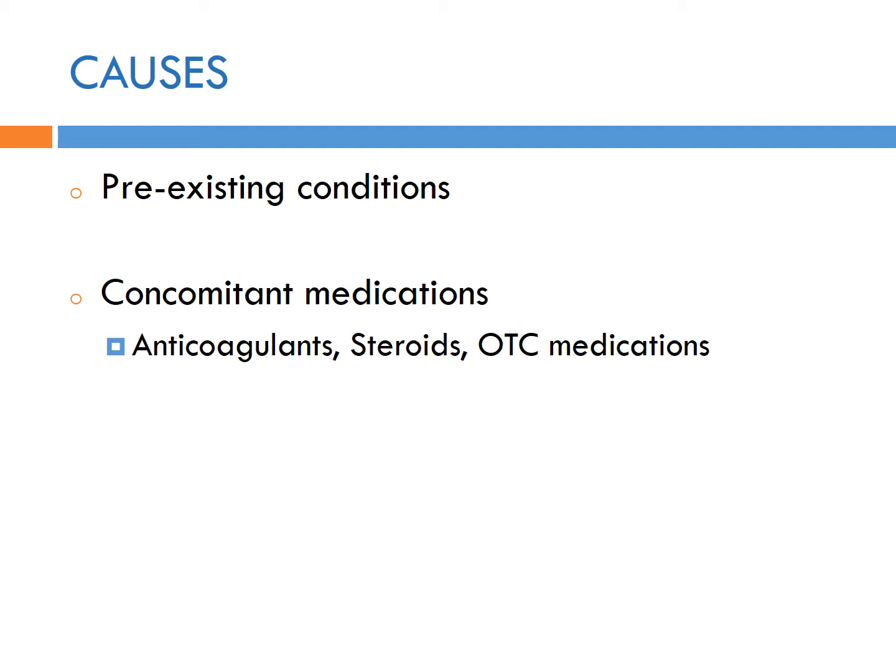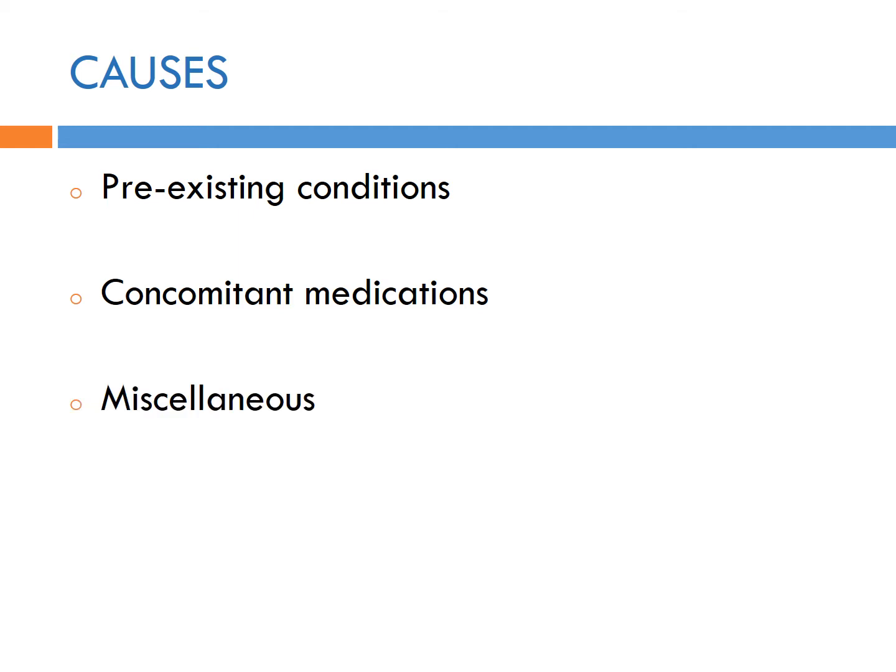There are also miscellaneous things that can contribute to adverse events: a reaction to a transfusion, or an accidental injury. If I was a participant on a trial and had a small motor vehicle accident on the way home and broke my arm, that would be an adverse event. It's an unfavorable medical condition that occurred while I was participating in clinical research. You can logically say it had nothing to do with the study drug, but we're still going to call that an adverse event.